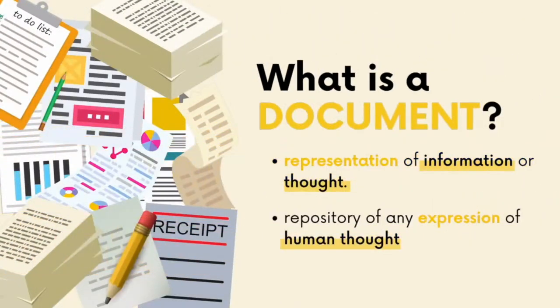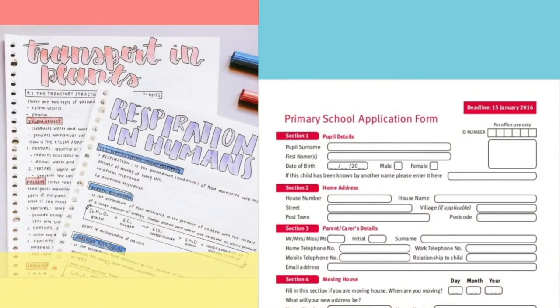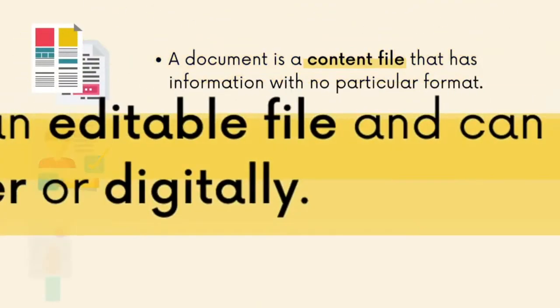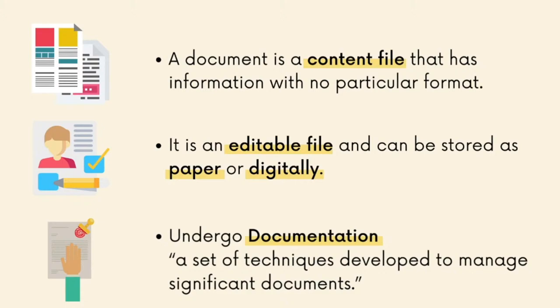Let's start with documents. A document is a representation of information or thought. Similarly, Doncar Davis and Michael Buckland characterize the document as a repository of any expression of human thought. To put it simply, any information in physical, electronic, or any other format is a document. If an information is to be available and maintained, then a document needs to be created. Examples could be written notes on a certain subject and an online school application form. Additionally, documents can be changed and revised as needed.